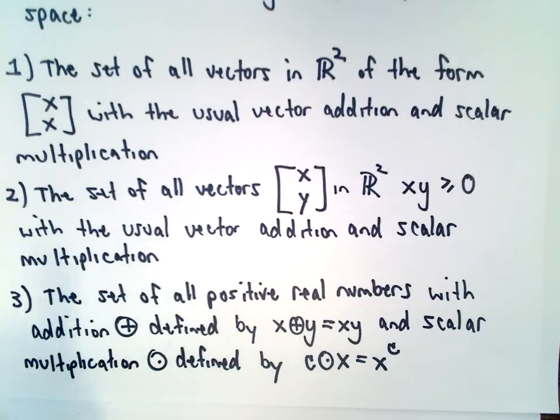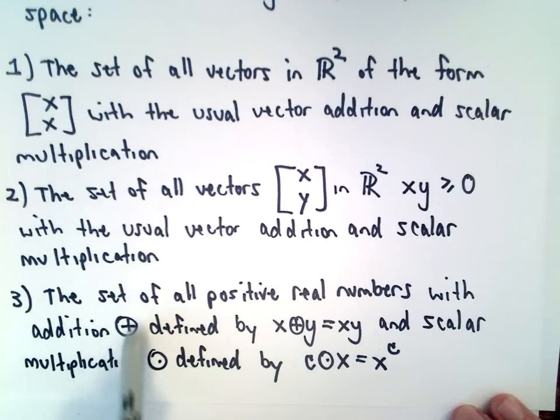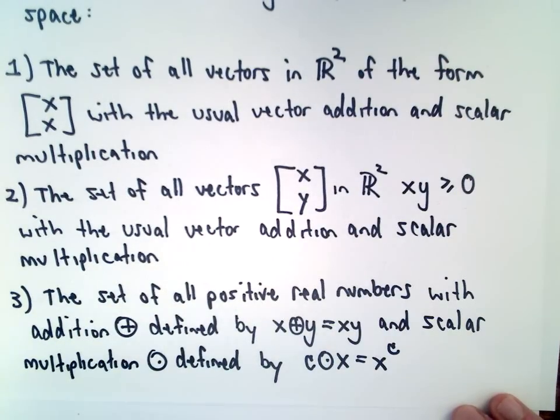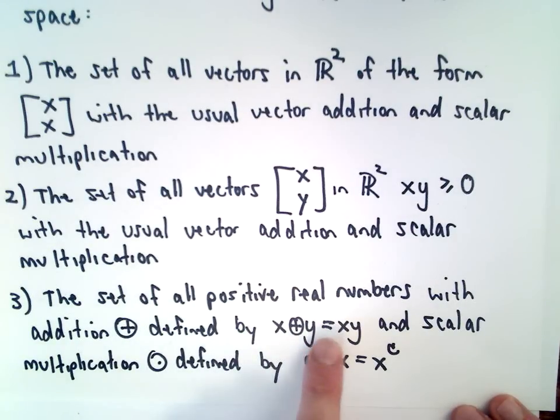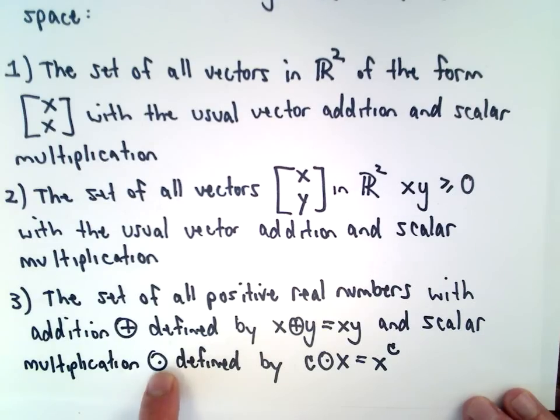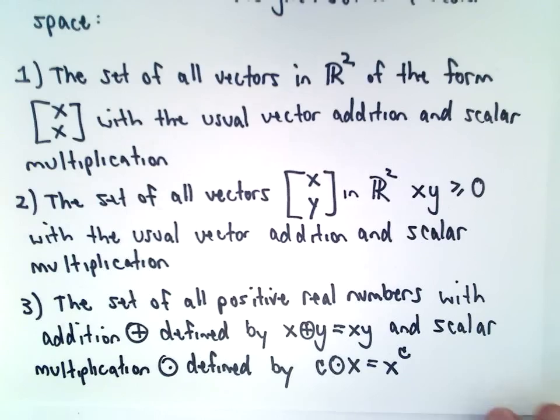Number three, this is one of those where we can define addition and multiplication however we want. So the set of all positive real numbers with addition, and a lot of times they'll put a little circle on it just to emphasize that you're not doing the same normal addition that you're used to. So that's the point of putting the circle. So in this case, if we take x plus y, that addition is going to be defined as x times y. And the scalar multiplication, that's going to be defined by C multiplied by x. That gives us x raised to the power of C.